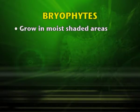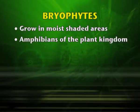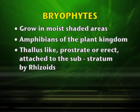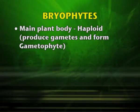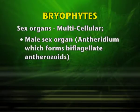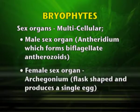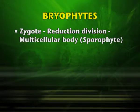Bryophytes grow in moist and shaded places. They are known as the amphibians of the plant kingdom. They are thallus-like, prostrate or erect, and attached to the substratum by root-like structures called rhizoids. They lack proper true root system, stem, or leaves. The main plant body is the haploid gametophyte which produces the gametes, and the sex organs are multicellular. The male sex organ is known as the antheridium, which forms biflagellate antherozoids; the female sex organ is known as the archegonium, which is flask-shaped and produces a single egg. After fertilization, the zygote undergoes reduction division and forms the multicellular body called sporophyte.